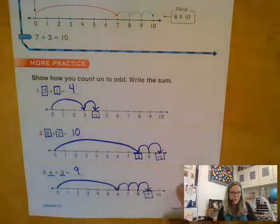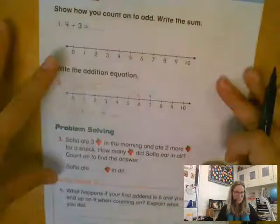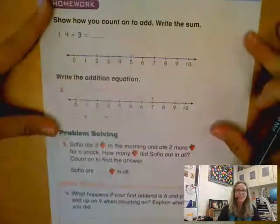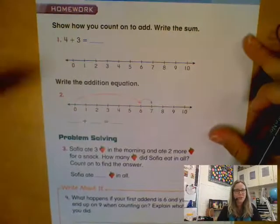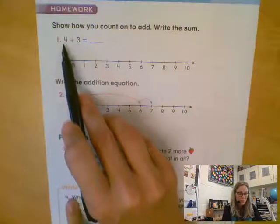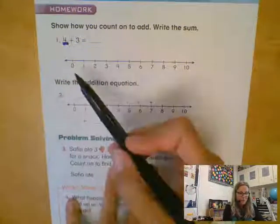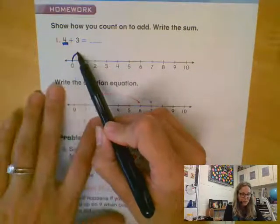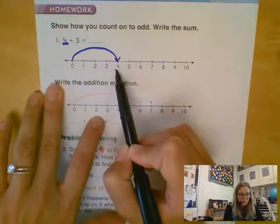At the top, it says show how you count on to add and write the sum. So we look at our two numbers, four and three. Four is the bigger number. So we will start at zero and take our first giant jump to the bigger number, four.